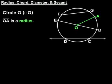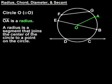We can see that segment OA is a radius of the circle because it represents the distance from a point on the circle to the center. Another way of defining a radius is a segment that joins the center of the circle to a point on the circle.